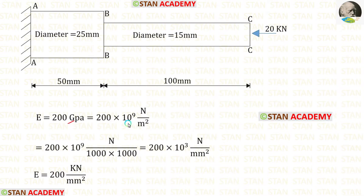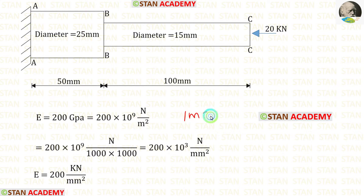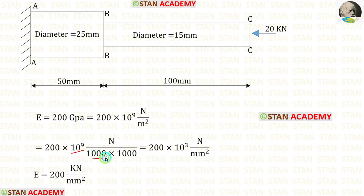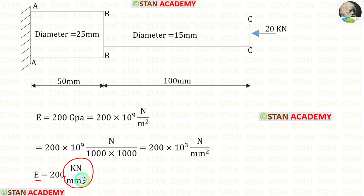Take Young's modulus E equal to 200 gigapascal. We know that giga is 10 to the power 9, and Pascal is Newton per meter square. We need to convert Newton per meter square into kilonewton per millimeter square. Since one meter equals 1000 millimeters and we have square units, we divide by 1000 times 1000. So 10 to the power 9 divided by 10 to the power 6 gives 10 to the power 3, which is kilo. Thus E is converted to kilonewton per millimeter square.